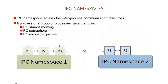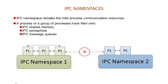IPC namespaces isolate certain inter-process communication resources, such as System V IPC objects and POSIX message queues. A process or group of processes in an IPC namespace, or a container created with an IPC namespace, have their own shared memory, semaphores, and message queues. This means two or more containers can create shared memory segments and semaphores with the same name, but are not able to interact with other containers' memory segments or shared memory.